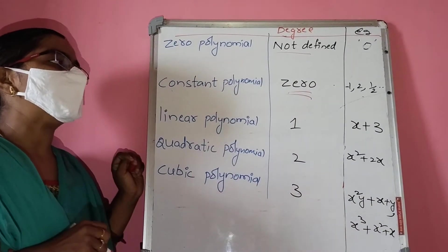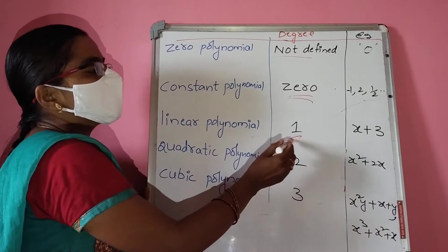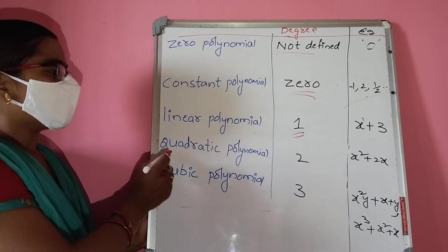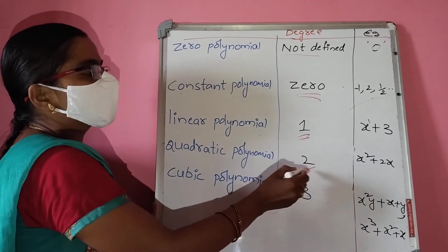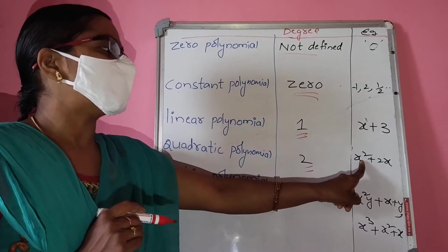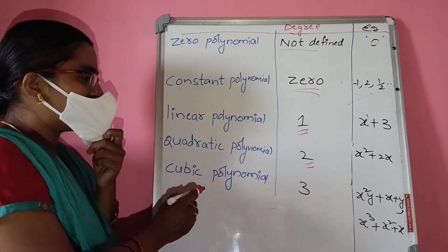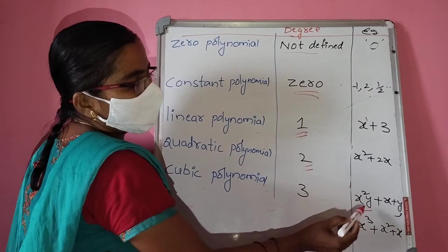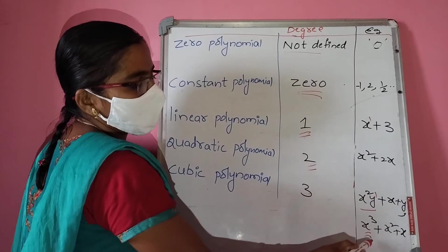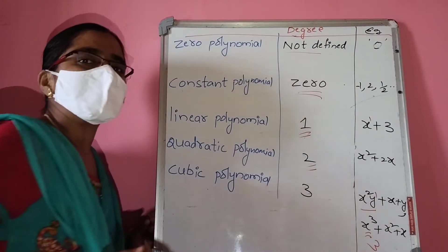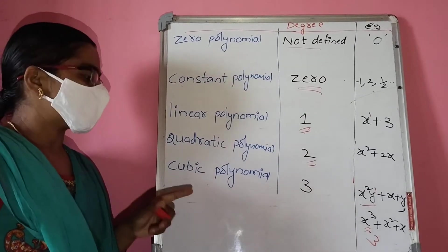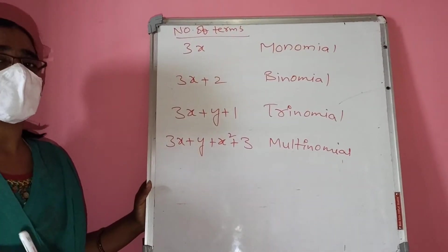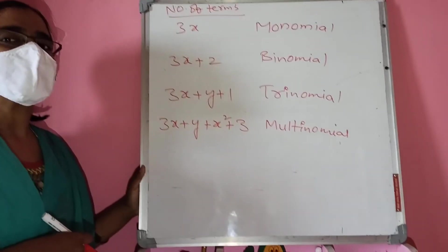Linear polynomial: if the degree of the polynomial is 1, that is called a linear polynomial. Quadratic polynomial: if the degree is 2, that is called a quadratic polynomial. Cubic polynomial: if the degree is 3, that is called a cubic polynomial — for example a term like x cubed has degree 3. These are the different types of polynomials based on degree.